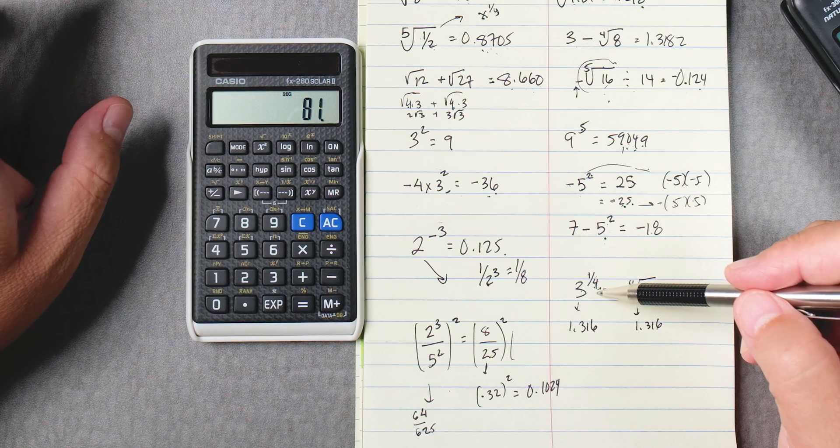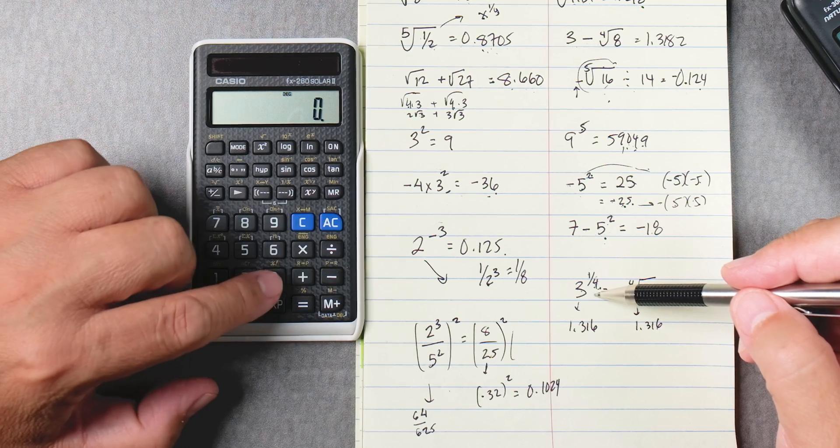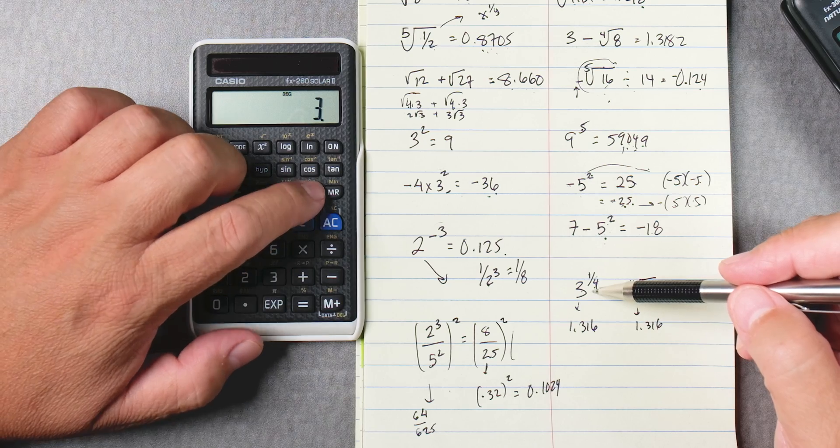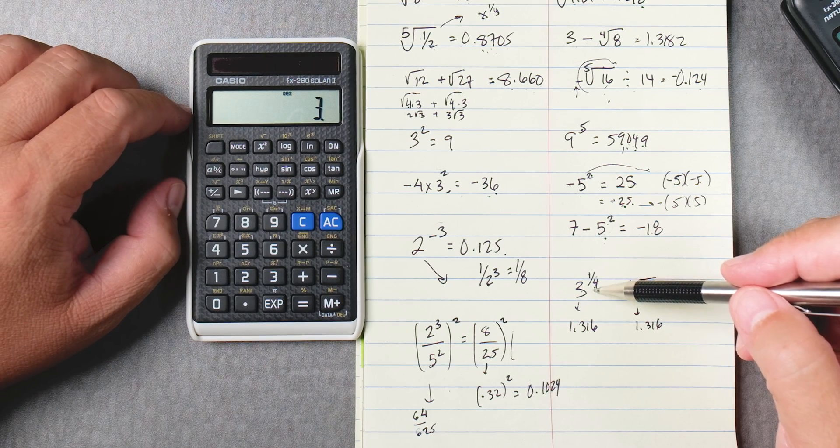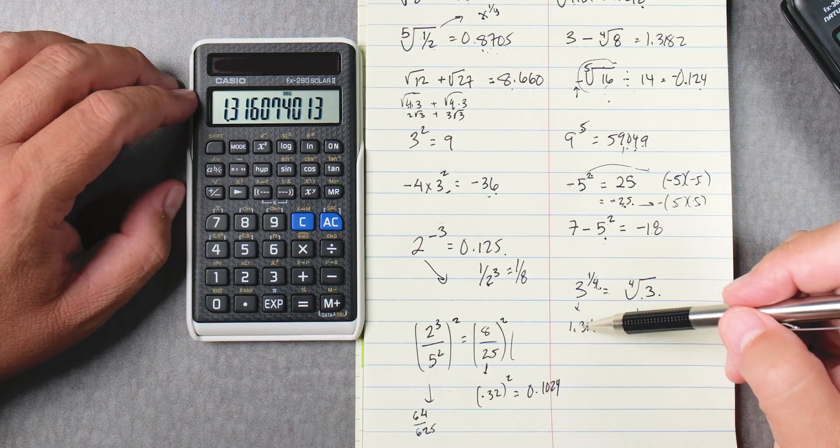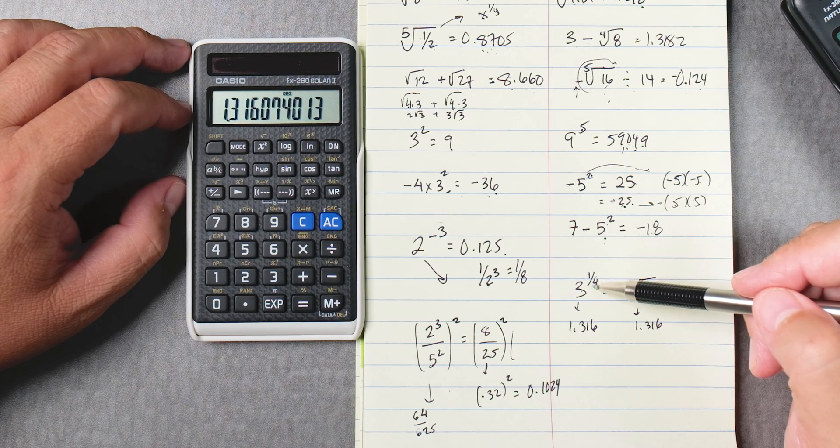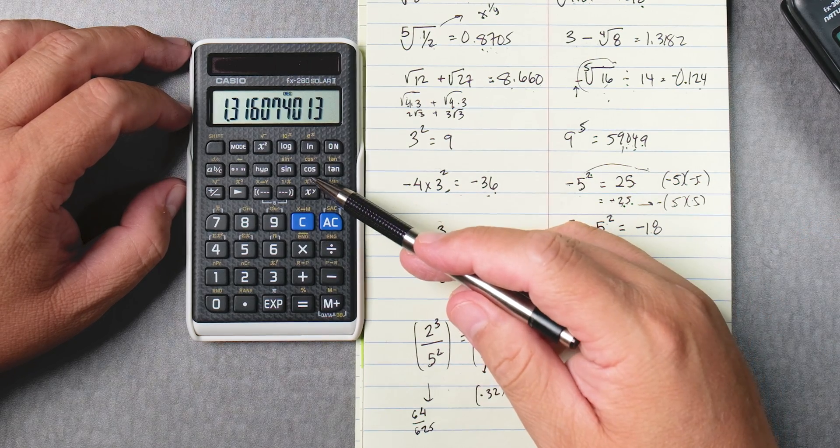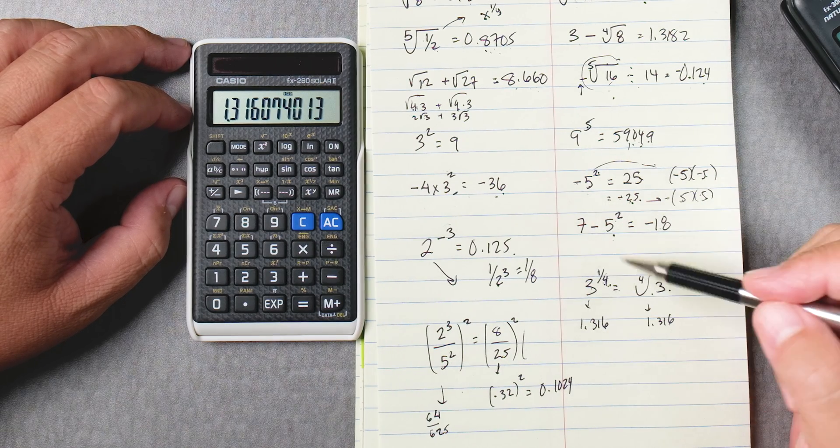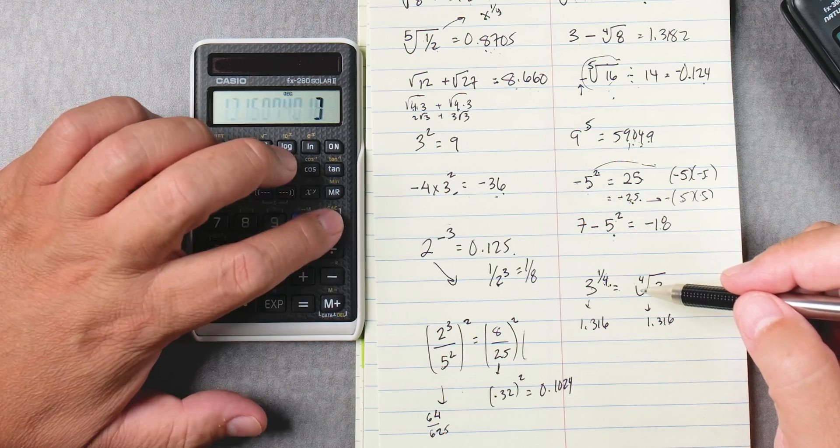Right, oops something went wrong here. Let's try that again. Three right, shift, left, x to the one to the y. We're going to just press four equals, there we go, 1.316. I forgot the one over four, okay. You don't type one over four, it's already done for you.